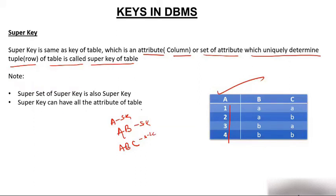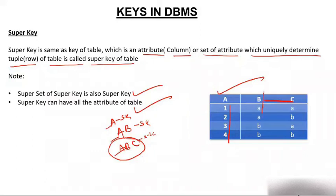Super key can have all the attributes of a table. So the different super keys are: A, AB, ABC. Now if you look at BC combined — B alone has repeating values, C alone has repeating values, so individually they cannot be keys. But if you combine B and C, all four values are different, so BC is also a super key. There are four super keys in this table: A, AB, ABC, and BC.